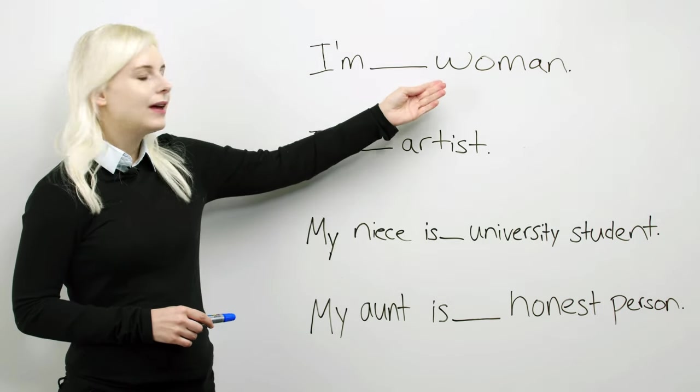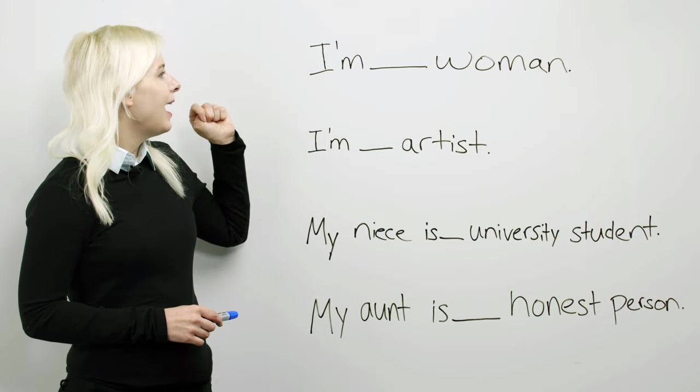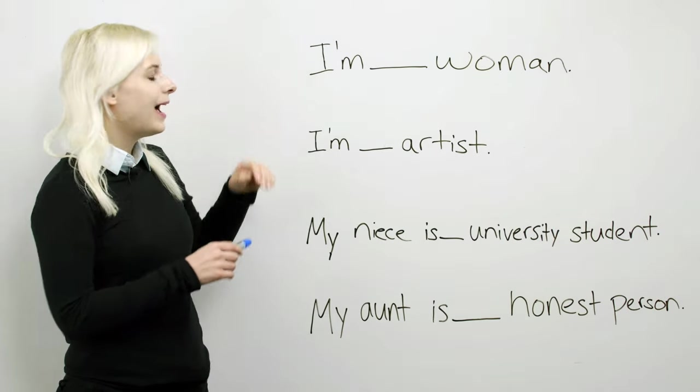Let's look at the board. Let's focus on a and an. When do we use a and an? So first sentence here, I'm blank woman. Woman starts with a W, so the answer here is a. I'm a woman.